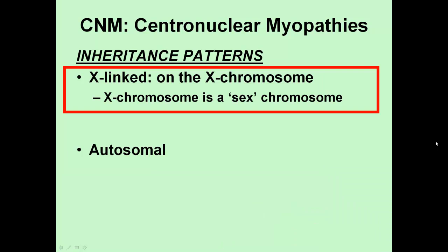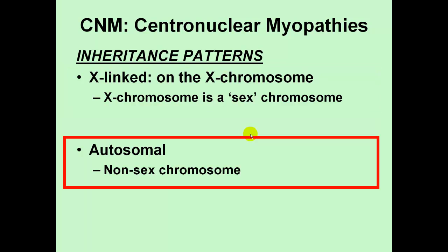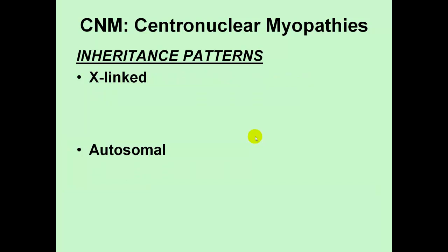X-linked means that the condition or gene is located on the X chromosome. The X chromosome is one of the two sex chromosomes — chromosomes that dictate the gender of the offspring are the X and Y chromosomes. Males have an X and a Y chromosome, whereas females have two X chromosomes. Autosomal chromosomes are the non-sex chromosomes — basically the dozens of other chromosomes present in all human cells.